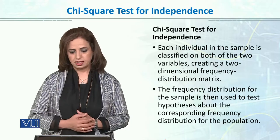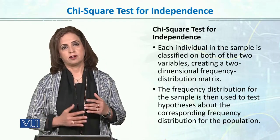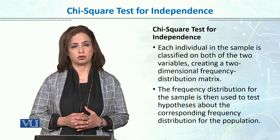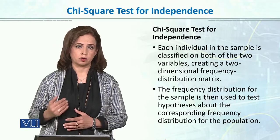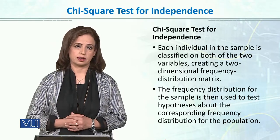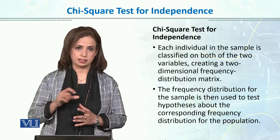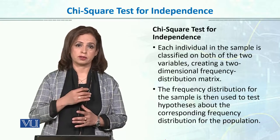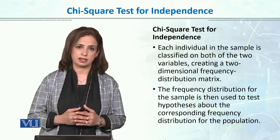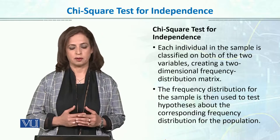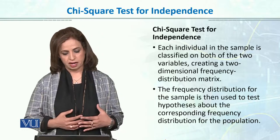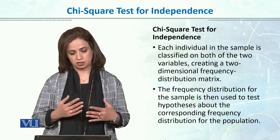In this case, we have two variables and the two variables are categorical — nominal or ordinal. We have categories and frequencies. We check whether the two variables are related or independent. Usually the data has a matrix structure.